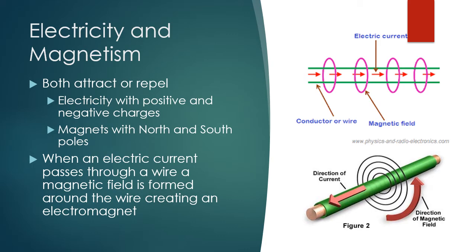Electricity and magnetism can work together. Both have similar properties — likes repel and opposites attract — with electricity using positive and negative charges and magnets using north and south poles. When you combine the two and have an electric current passing through a wire, you can form a magnetic field, creating what is called an electromagnet. The red arrows in this diagram show the electric current, and the pink circles show the magnetic field that forms due to that electric current running through the conducting wire.